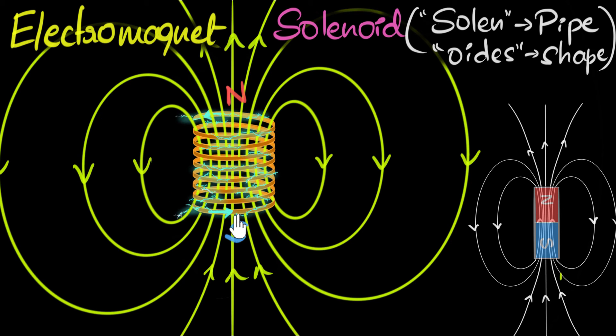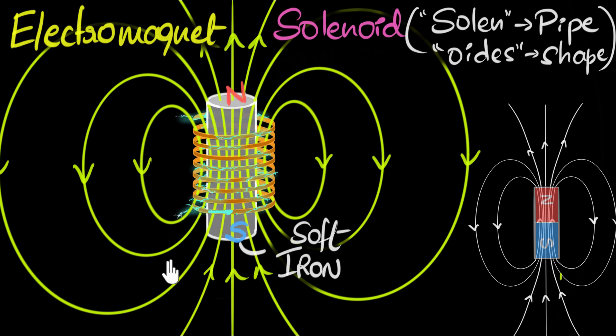And lastly, we can make electromagnets way stronger by introducing a soft iron rod. You see, iron is a magnetic material. This means when you place it in a magnetic field, it gets magnetized, starts behaving like a magnet, and adds on to the magnetic field already generated, making it much stronger.